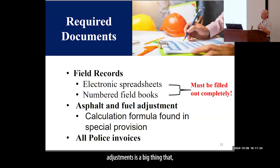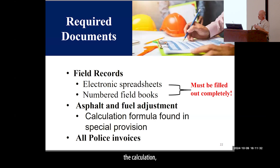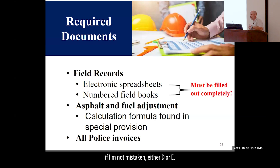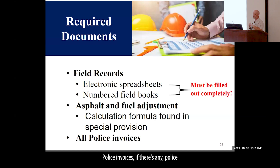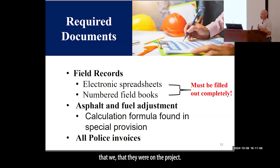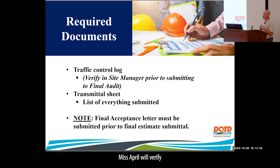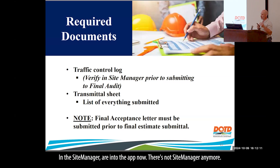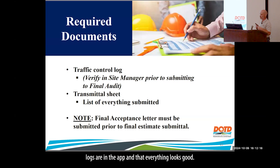Asphalt and fuel adjustments is a big thing we check on. If your project has this, the calculation can be found in a special provision — I think it's under Section 2E now. Police invoices: if there's any police traffic control on the project and you're paying for the police, we need those invoices showing they were on the project. Ms. April will verify that all traffic control logs were entered in the app — they moved it from Site Manager to the app now.